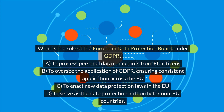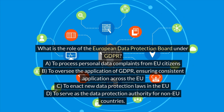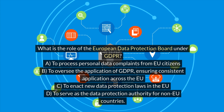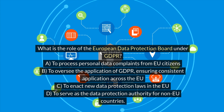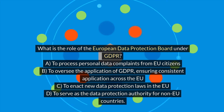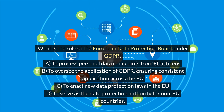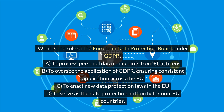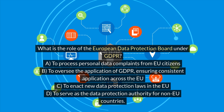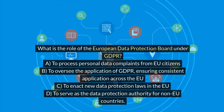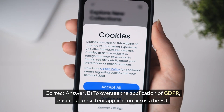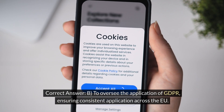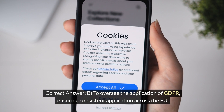What is the role of the European Data Protection Board under GDPR? A. To process personal data complaints from EU citizens. B. To oversee the application of GDPR, ensuring consistent application across the EU. C. To enact new data protection laws in the EU. D. To serve as the data protection authority for non-EU countries. Correct answer: B. To oversee the application of GDPR, ensuring consistent application across the EU.